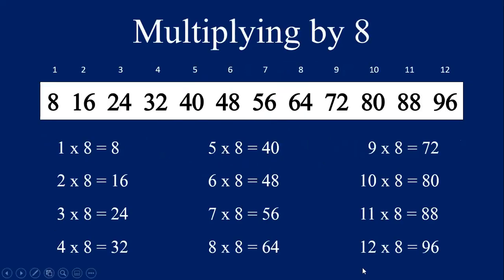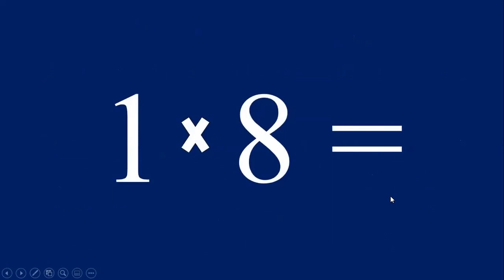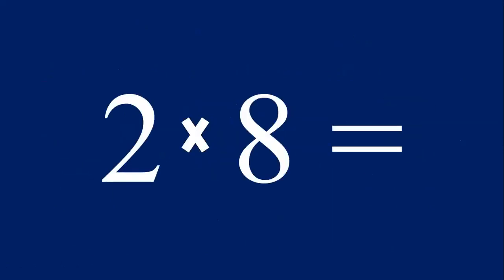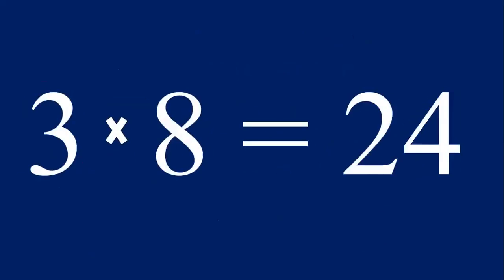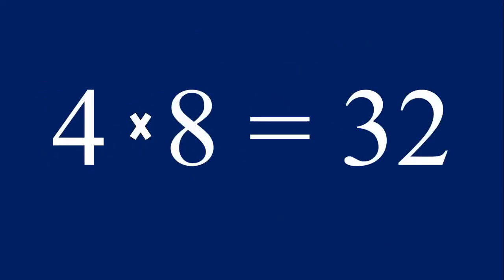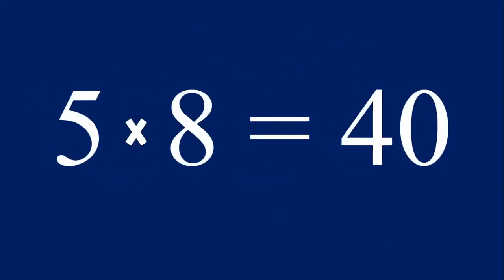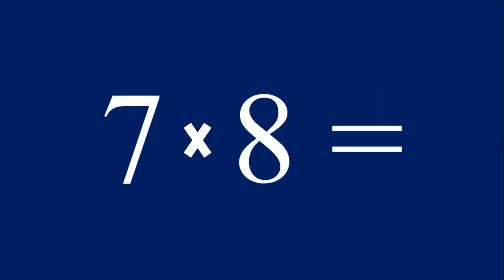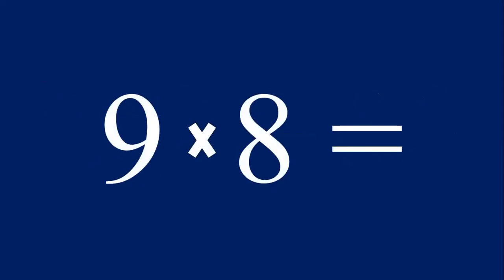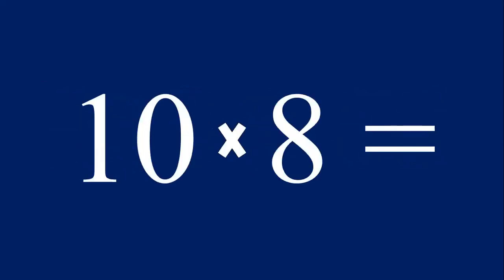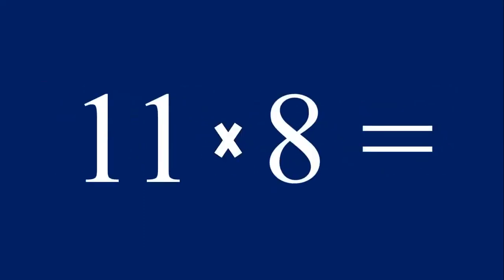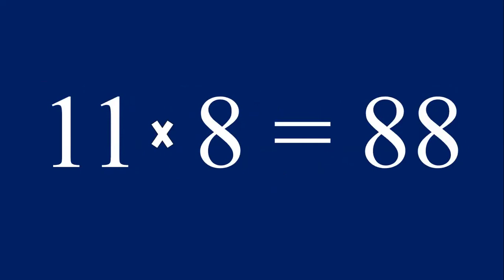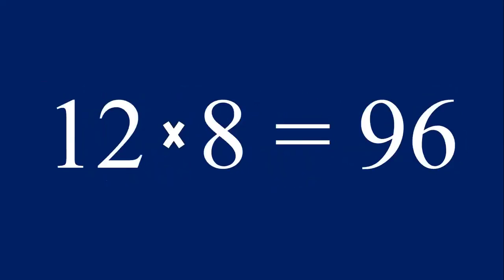Now let's multiply one through 12 by the number eight. One times eight equals eight, two times eight equals 16, three times eight equals 24, four times eight equals 32, five times eight equals 40, six times eight equals 48, seven times eight equals 56, eight times eight equals 64, nine times eight equals 72, ten times eight equals 80, eleven times eight equals 88, and twelve times eight equals 96.